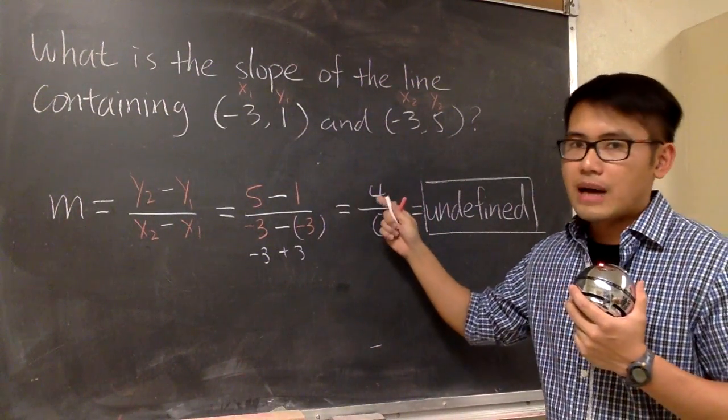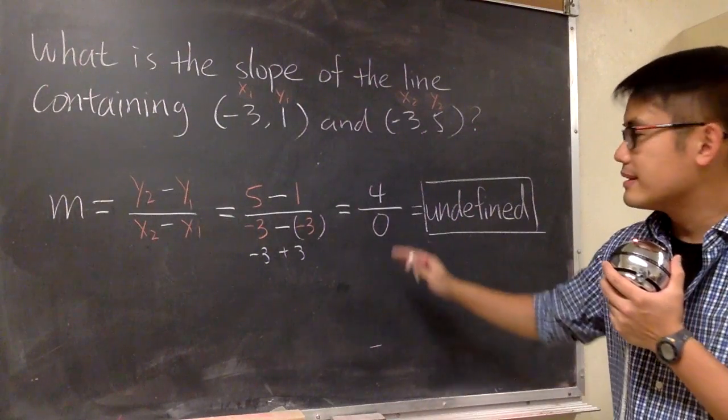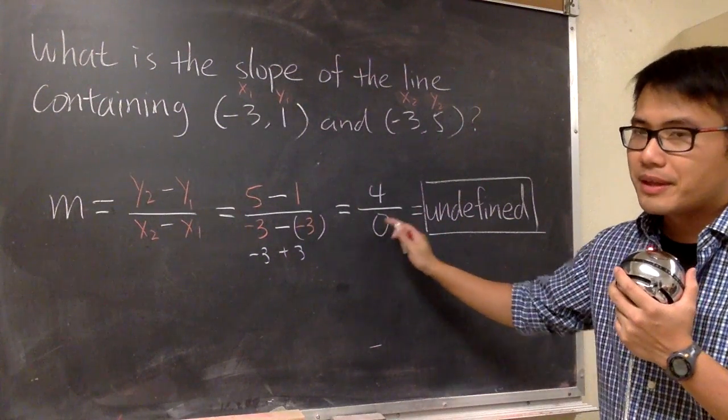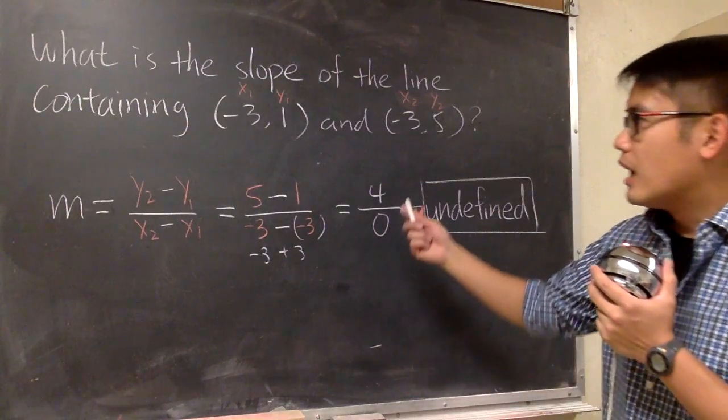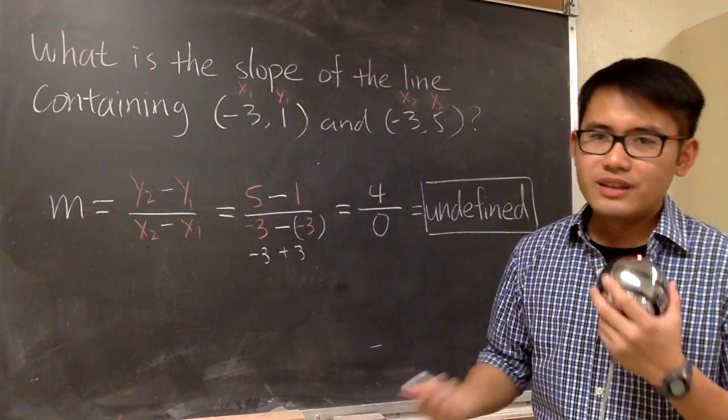If the 0 was on the top, then the answer would be 0, but 0 is in the denominator in our case. So this right here is undefined. And how can we end up with a slope that's undefined? What does that mean?